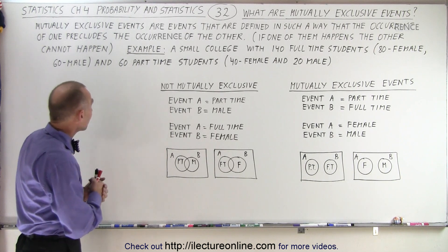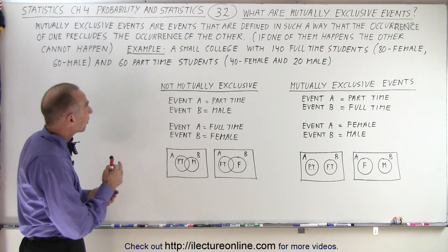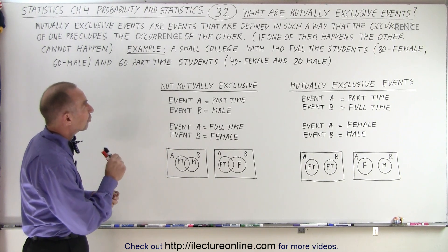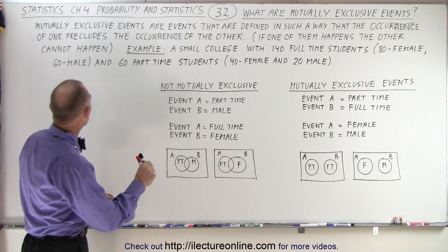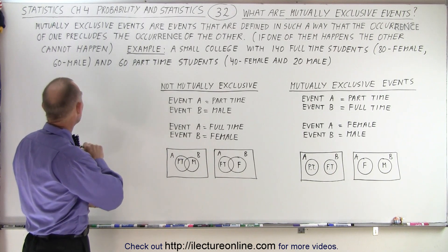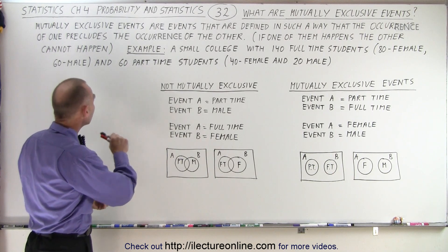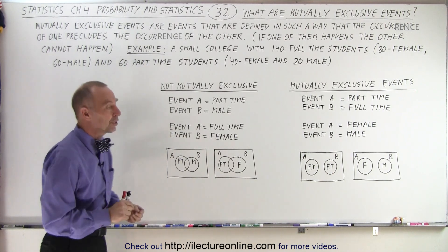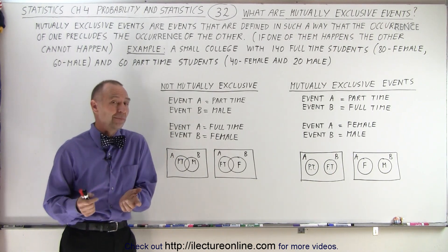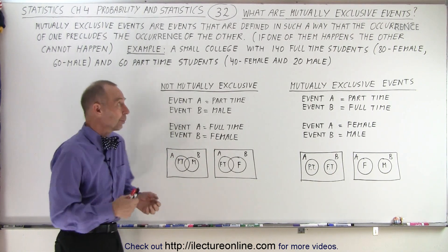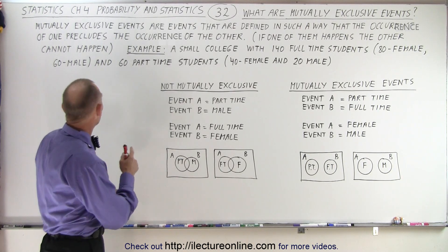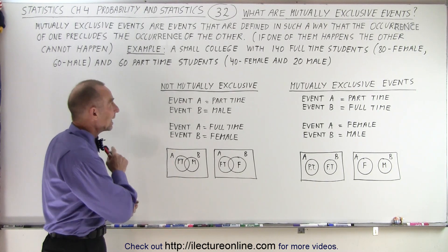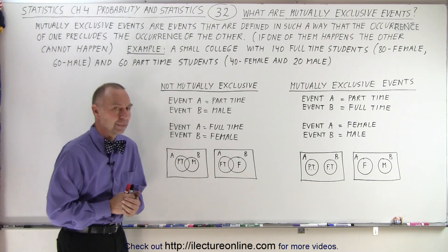Mutually exclusive events are events that are defined in such a way that the occurrence of one precludes the occurrence of the other. And what does that mean? Precludes? Well, it means if one of them happens, the other one cannot happen.